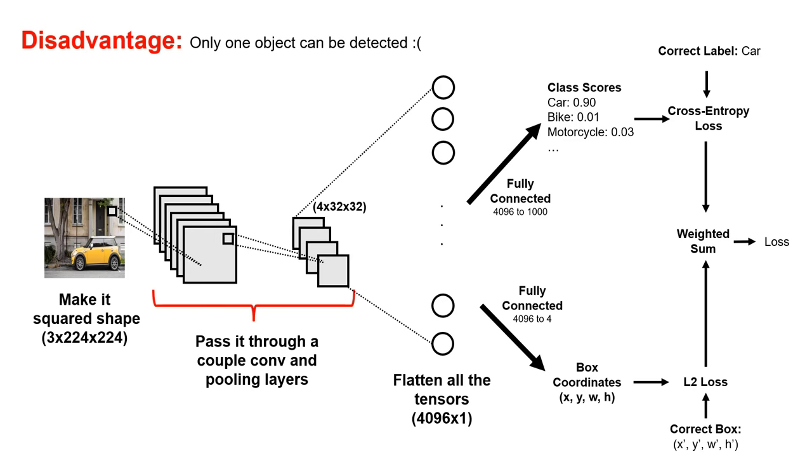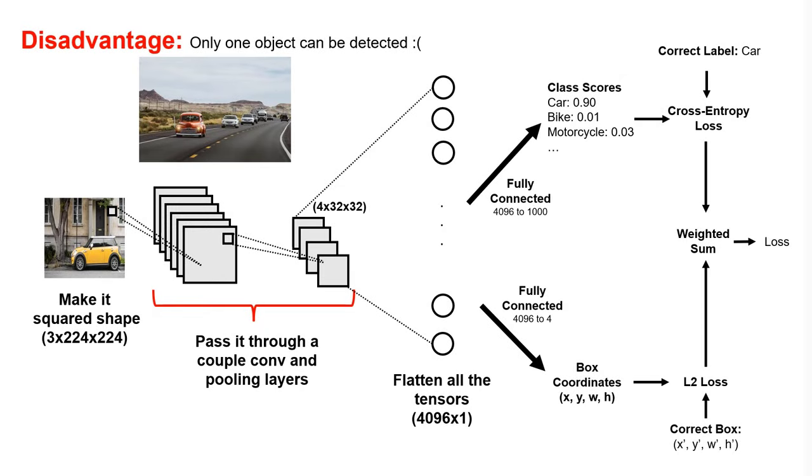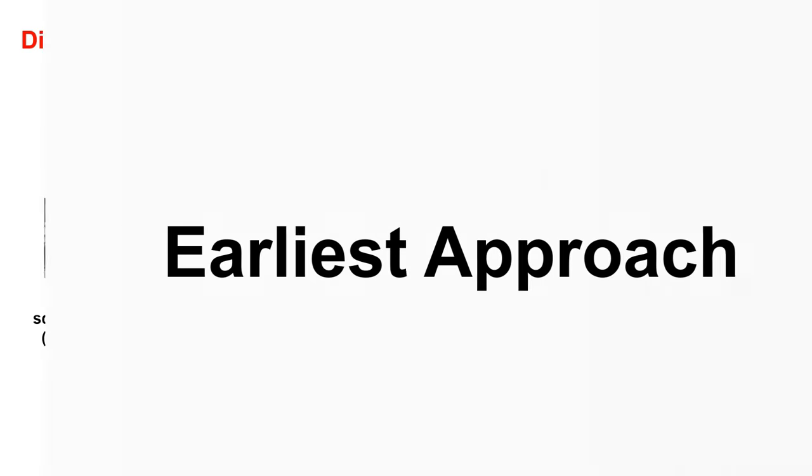All of the things we do after fully connected layer is gonna get separated as a branch. The other branch is another fully connected layer to output our bounding box coordinates. We already know the correct bounding boxes during training and we use L2 loss for this loss function. That seems pretty easy, but it only can detect one object in the picture because we just output one single bounding box coordinate.